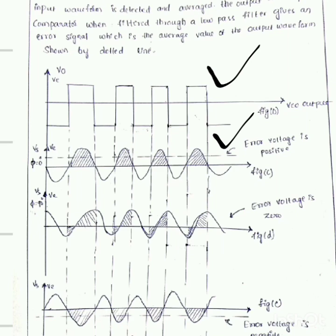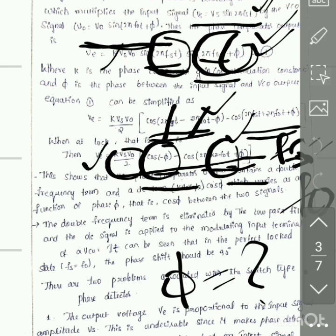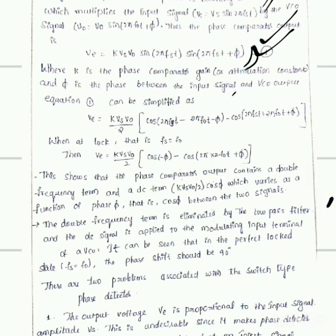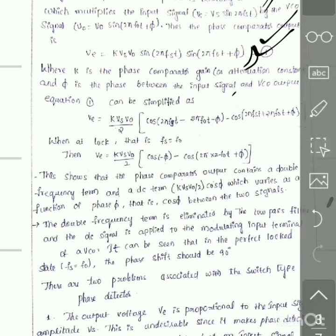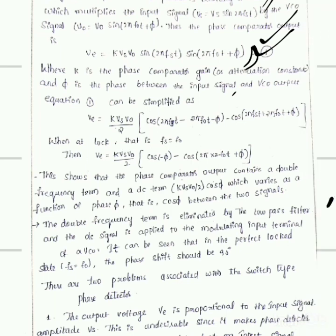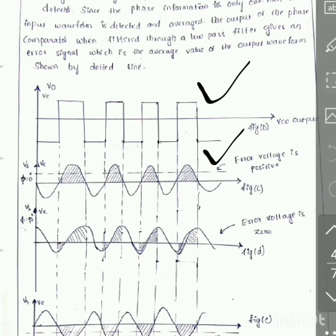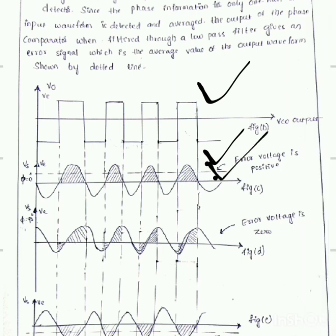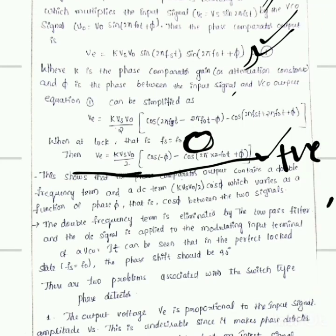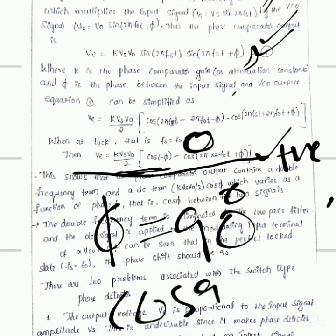Whenever we take φ = 0, substituting φ = 0 into the equation gives a positive error value — that is why the positive peaks indicate the error is positive. If we substitute φ = 90, then cos(90) = 0, so the output of the phase detector becomes 0. Whatever positive error we were getting is cancelled out by the negative error, making the total error zero.